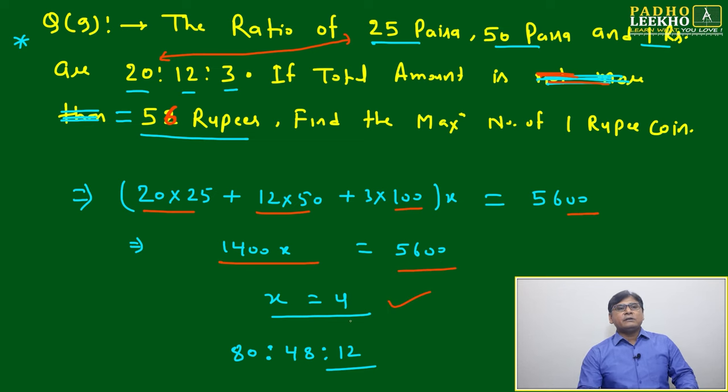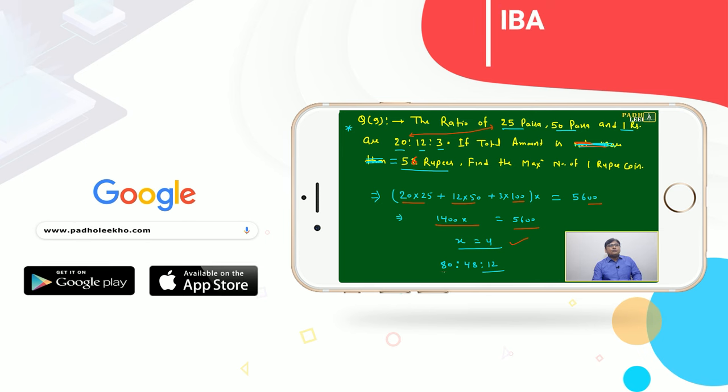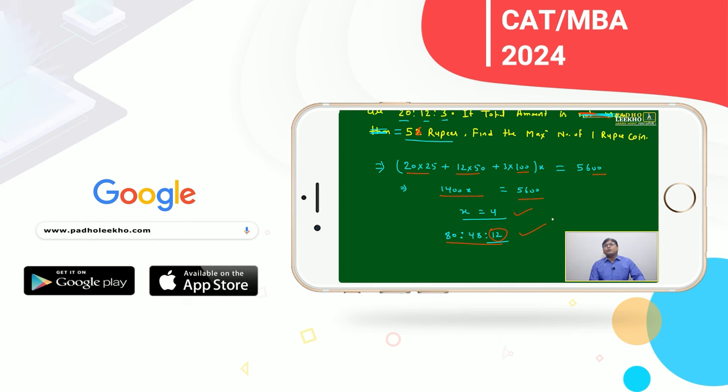Then it will come 1400x. From this you will get x equals 4. Here the common factor is 4. Then this ratio 20:12:3 will change into 80:48:12. What is the maximum number of 1 rupee coins? 12 only.